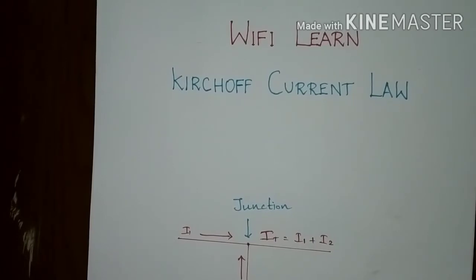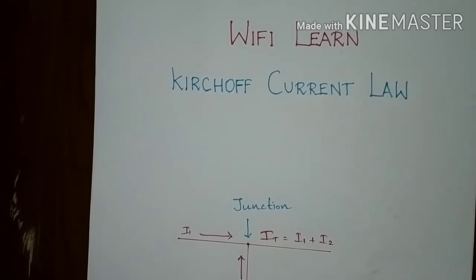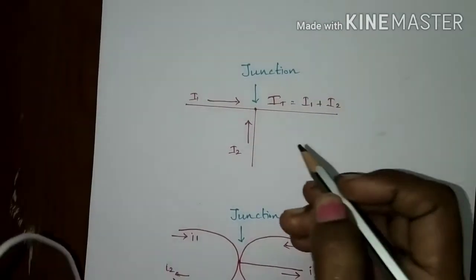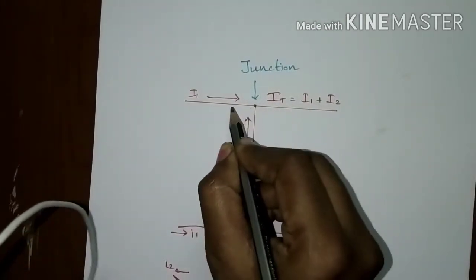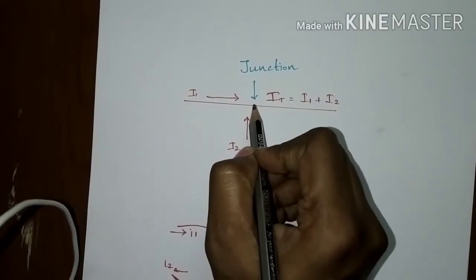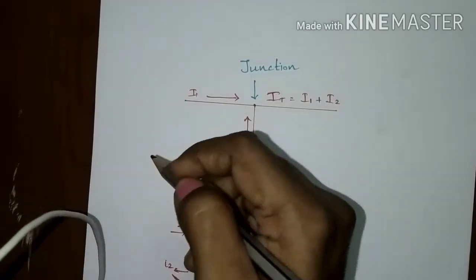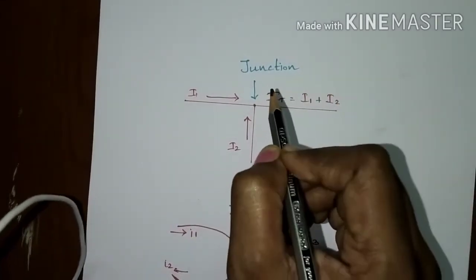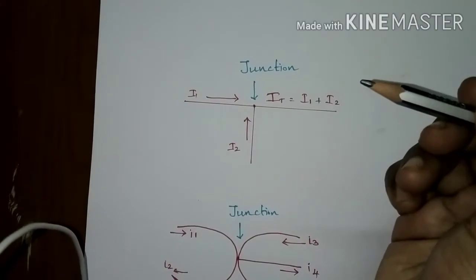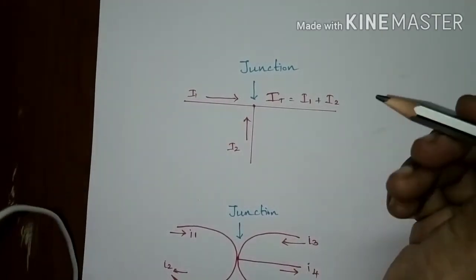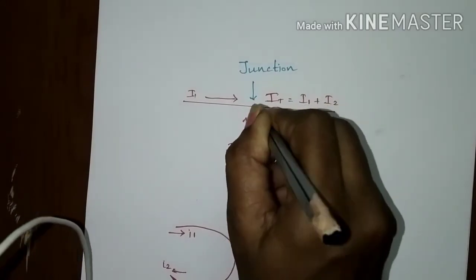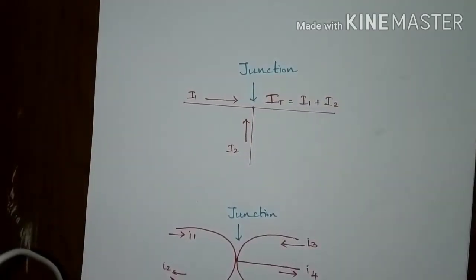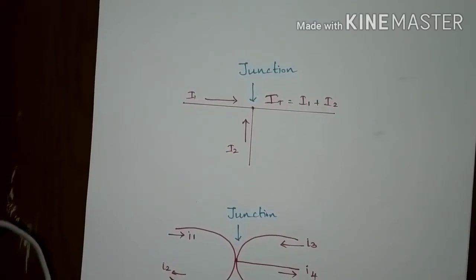The first law we are going to see is Kirchhoff's current law. Kirchhoff's current law is Kirchhoff's first law, which deals with the conservation of charge entering and leaving the junction. A junction in a circuit is a point where two or more branches are connected. If two branches are connected, that node is termed a simple node, and if three or more branches are connected, that node is termed a principal node.